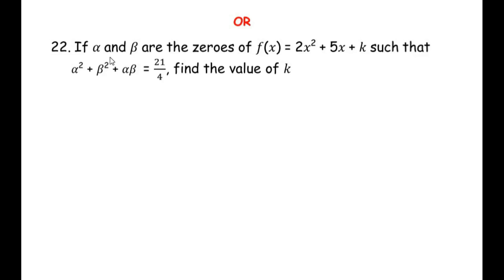Now the OR question is also from the polynomials chapter. If alpha and beta are the zeros of f(x) equals 2x squared plus 5x plus k, such that alpha squared plus beta squared plus alpha beta equals 21 over 4, find the value of k.